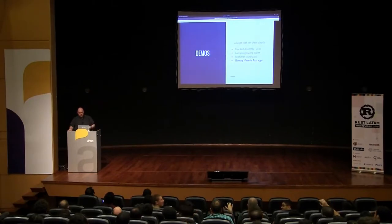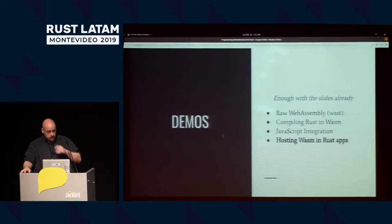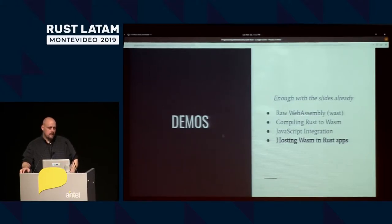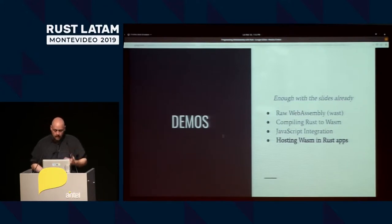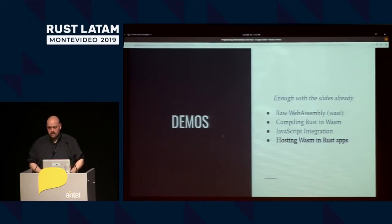If you're planning on exploring WebAssembly and want to build a user interface, you owe it to yourself to look at a library called Yew — Y-E-W. It's a Rust-native library that gives you a React/Redux-style set of message passing to control a virtual DOM, and it all compiles into WebAssembly. If I have to do front-end web development, doing it in Rust isn't such a bad thing.